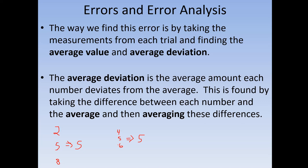The way we find average deviation is by taking each of the numbers and finding the absolute value difference between each number and the average. So for 2, 5, 8: two minus five is a deviation of three, five minus five is zero, and eight minus five is a deviation of three. Three plus zero plus three equals six, divided by three gives an average deviation of two. For 4, 5, 6, the average deviation would be two-thirds. This is how we show that the second set of data is much better and more accurate than the first.